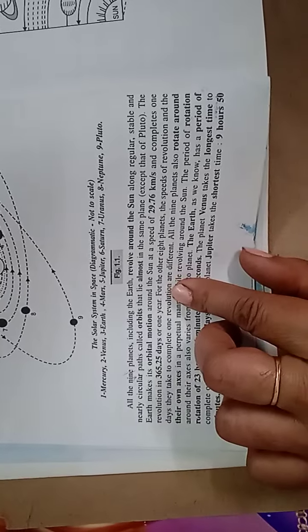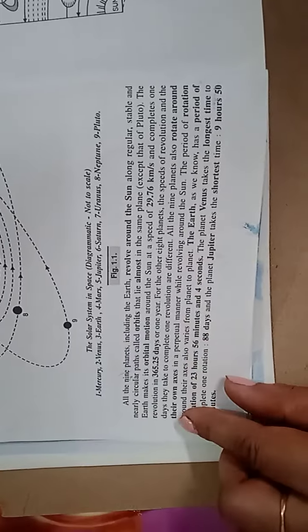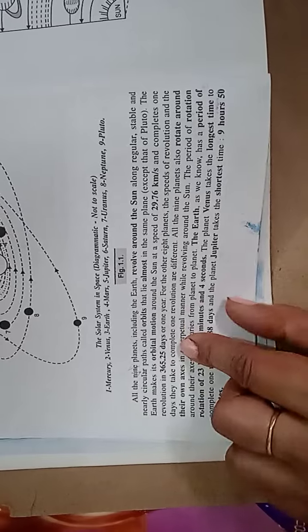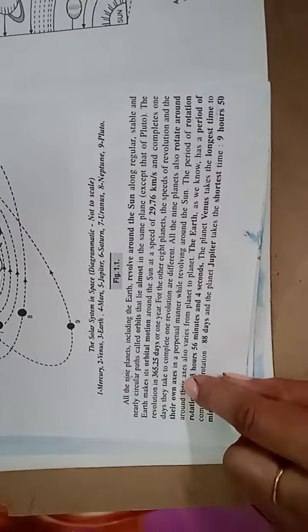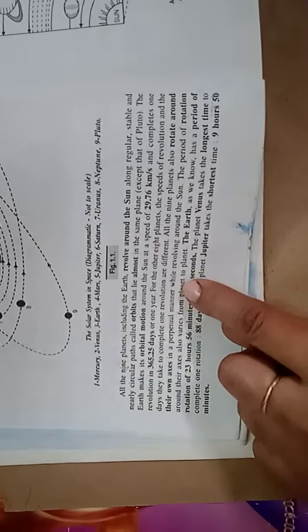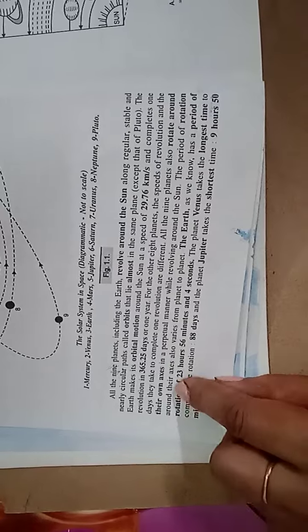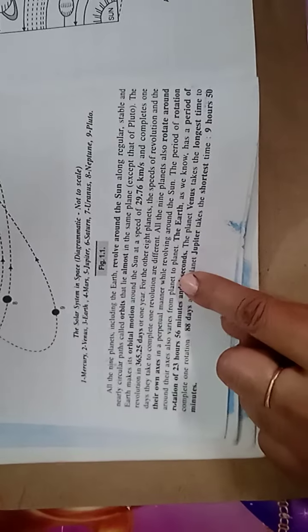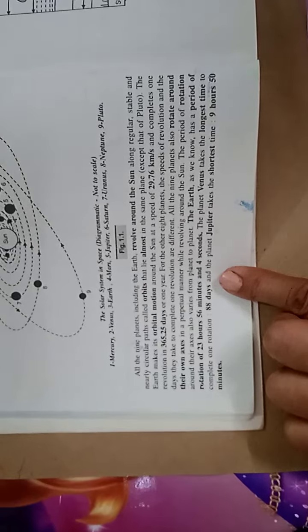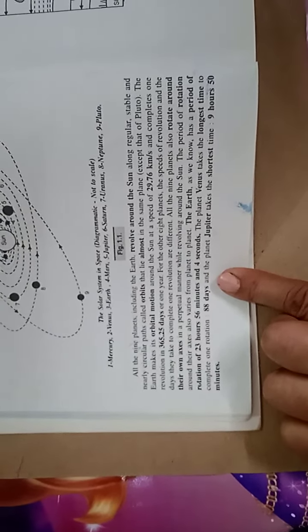For the other eight planets, the speed of revolution and the days taken to complete one revolution are different. All nine planets also rotate around their own axis in a perpetual manner while revolving around the Sun. The period of rotation varies from planet to planet. The Earth has a rotation period of 23 hours, 56 minutes and 4 seconds.